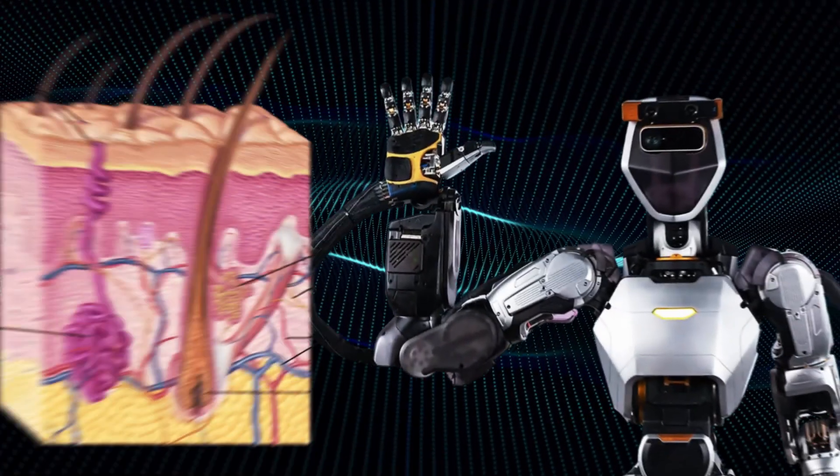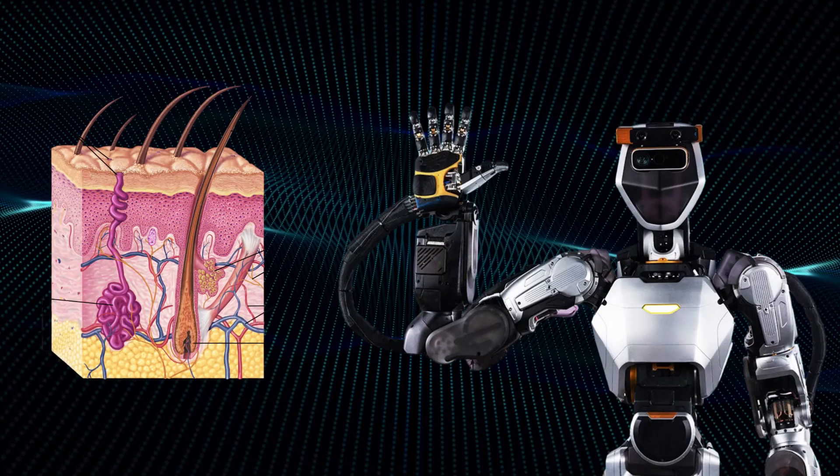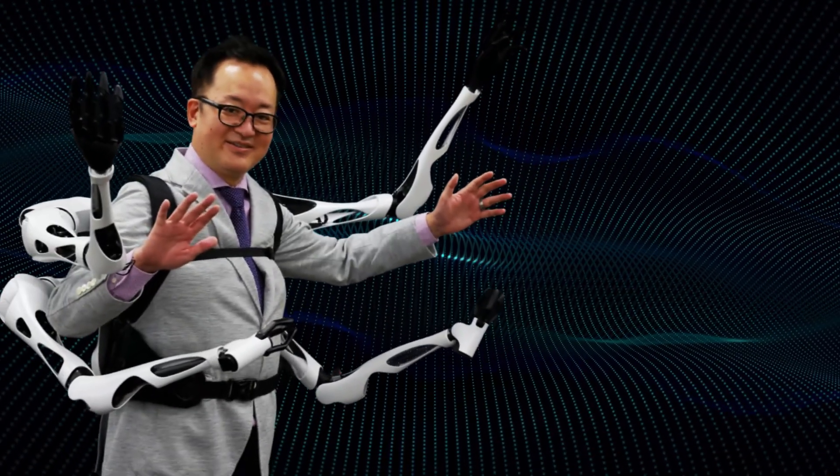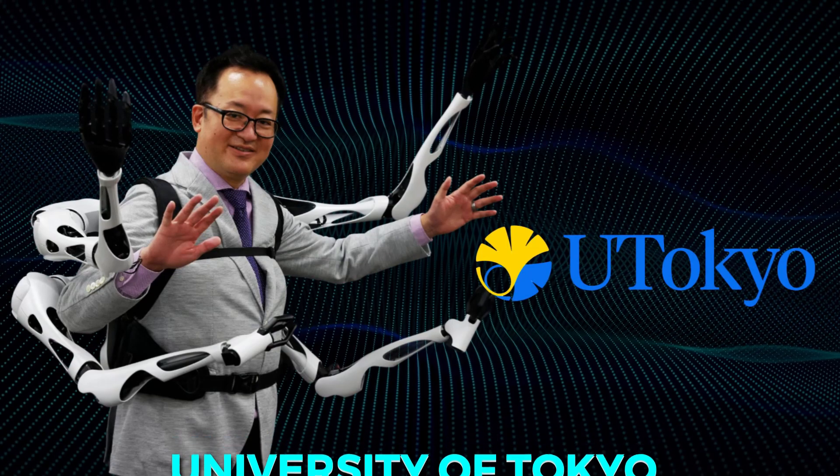So how do you make a robot with skin? It's not as simple as just slapping a piece of human skin on a metal frame. Scientists at the University of Tokyo had to get creative.